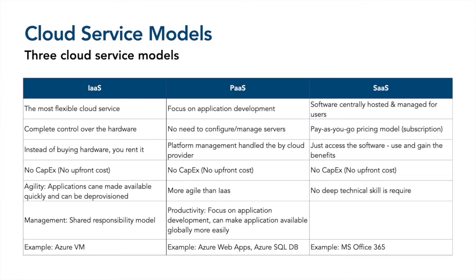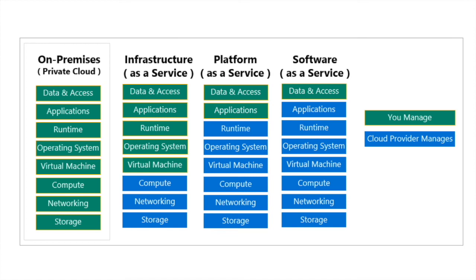The third cloud service model is Software as a Service (SaaS). The software is centrally hosted and managed for the users — you just buy and utilize the software; no development or deployment is required. You simply subscribe and start utilizing it. There is no CapEx and no technical knowledge required. An example is Microsoft Office 365. A more general example is Netflix — you just subscribe and start using the software, which is the essence of SaaS.